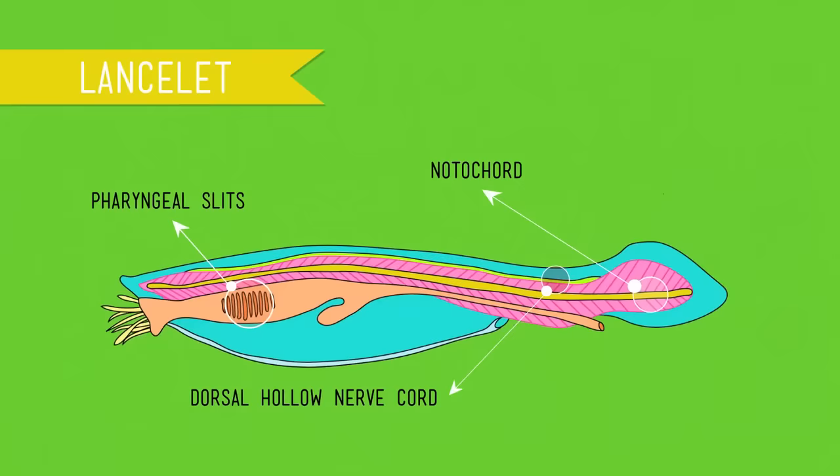And finally, we can't forget our fourth synapomorphy, the post-anal tail, which is exactly what it sounds like. It helps propel aquatic animals through the water, makes our dog look happy when she wags it. And in humans, it shrinks during embryonic development into what is known as the coccyx, or tailbone, right here. And trust me, when it comes to tail placement, post-anal is the way to go.